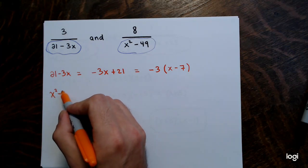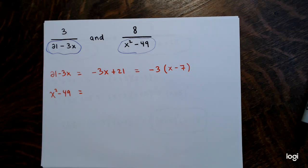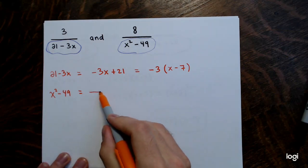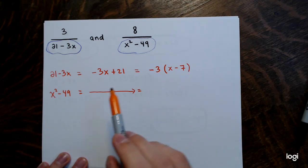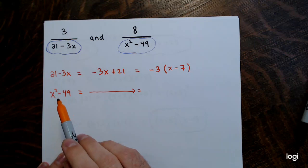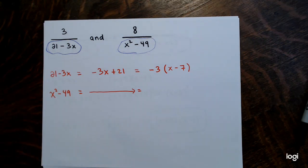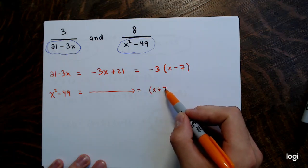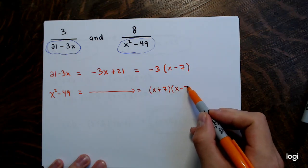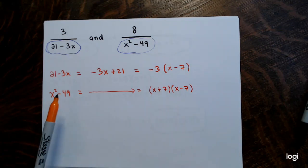For the second denominator, x squared minus 49 is a difference of two squares — x squared minus 7 squared — which factors as (x plus 7)(x minus 7). That's as fully factored as this denominator gets. We now have the complete factorizations of both denominators.